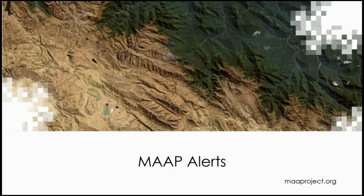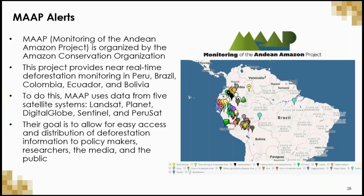Another useful option is the Monitoring of the Andean Amazon Project, or MAP — an initiative of the Amazon Conservation Organization providing near real-time deforestation monitoring for Peru, Brazil, Bolivia, Colombia, and Ecuador. MAP makes use of data from five different satellites with multiple spatial and temporal resolutions, including Landsat, Planet, Digital Globe, Sentinel, and Perusat.